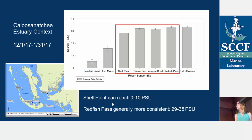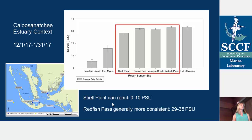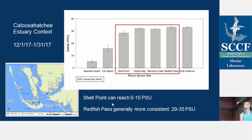The salinities aren't really that different between our four sites during the study period. Further up at Sanibel Island and Fort Myers you get lower salinities because the water is fresher. But you do get a general salinity gradient as you move away from the river. Shell Point can reach pretty fresh salinities of 0 to 10 PSU, while Redfish Pass in Pine Island Sound is more consistent between 29 and 35 PSU — 35 being the average PSU of seawater.